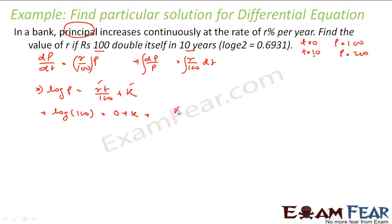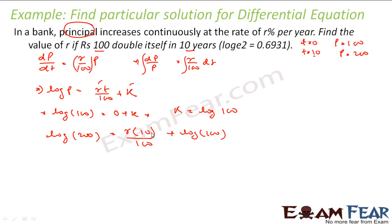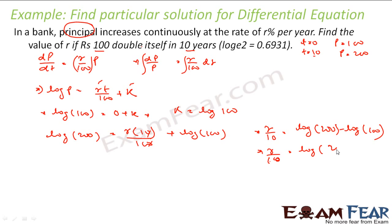Now putting t = 10 and p = 200: log(200) = r·10/100 + log(100). So r/10 = log(200) − log(100) = log(200/100) = log(2) = 0.6931. Therefore r = 10 × 0.6931 = 6.931, which is the rate of interest.